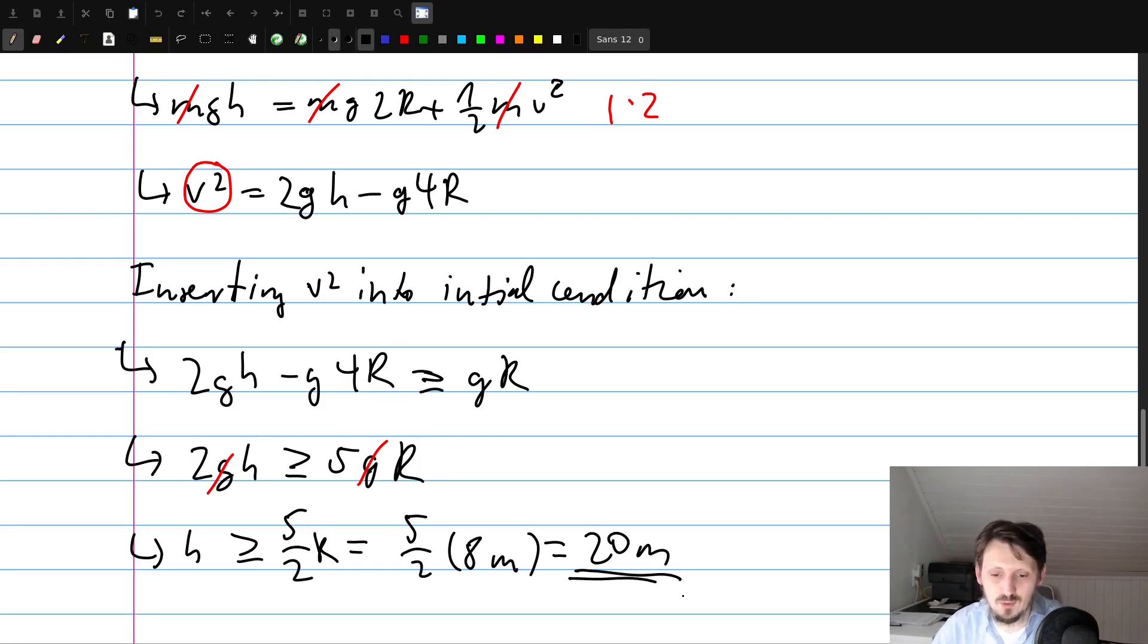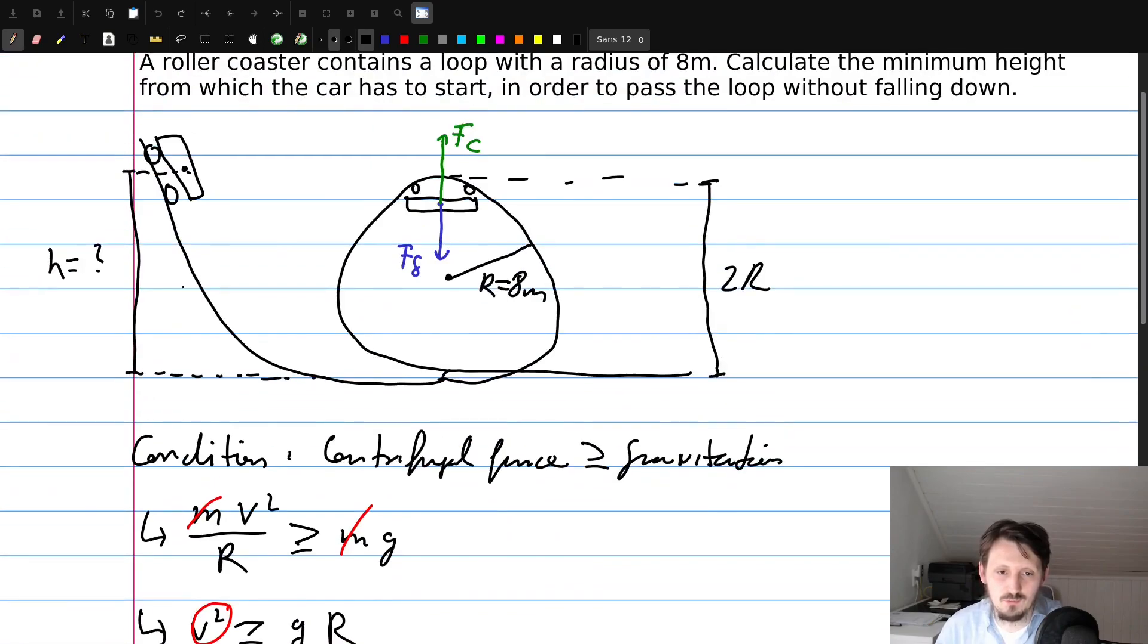Okay, so we know now when we start the car from the height of 20 meters, we can write this down here, 20 meters, then it would pass the looping without any problem.